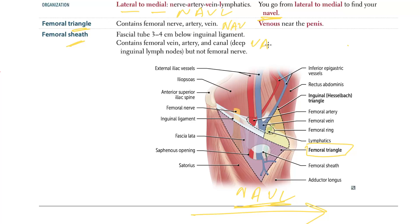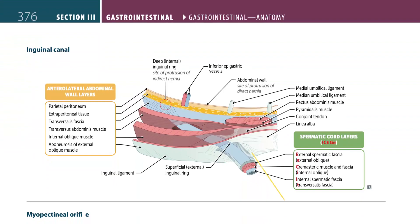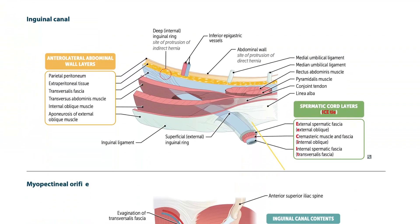So to summarize: for the femoral sheath you have the artery and the vein but not the nerve. Moving on — the inguinal canal is really important. In males it contains the spermatic cord, and in females it contains the round ligament.